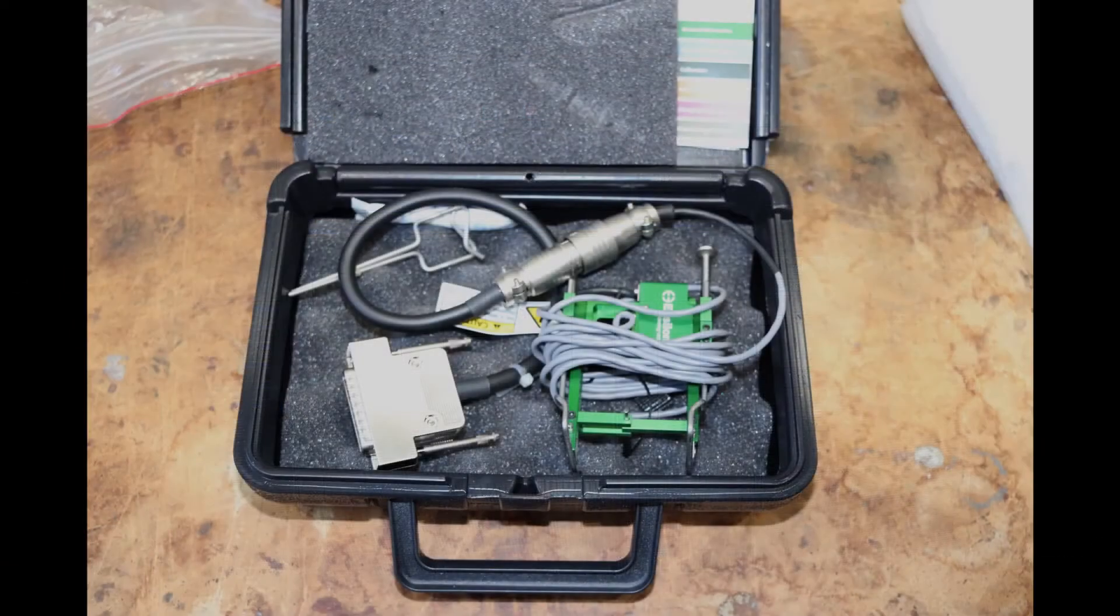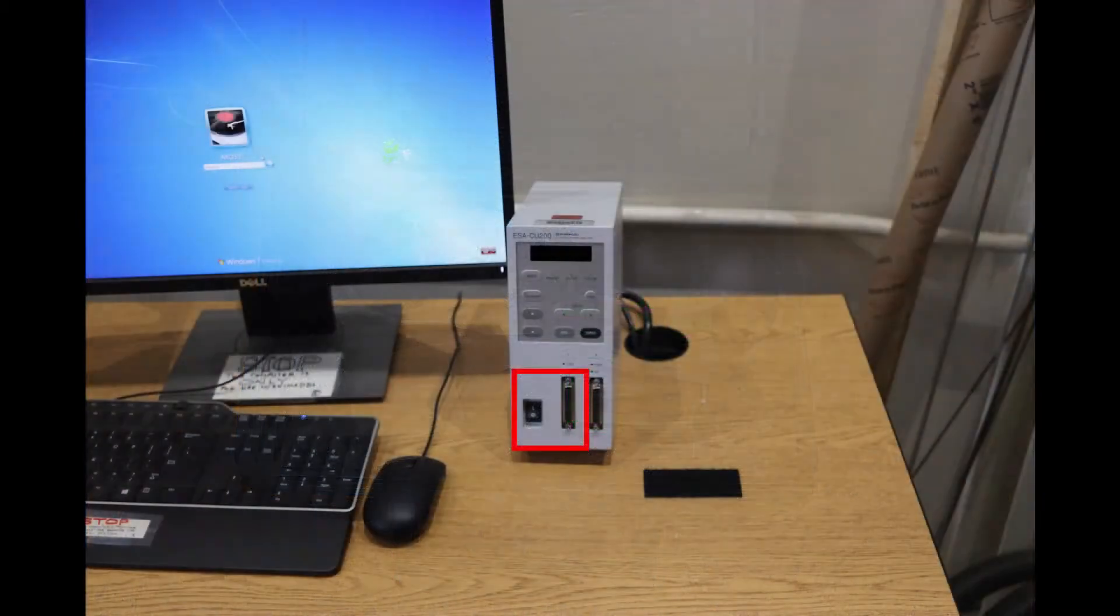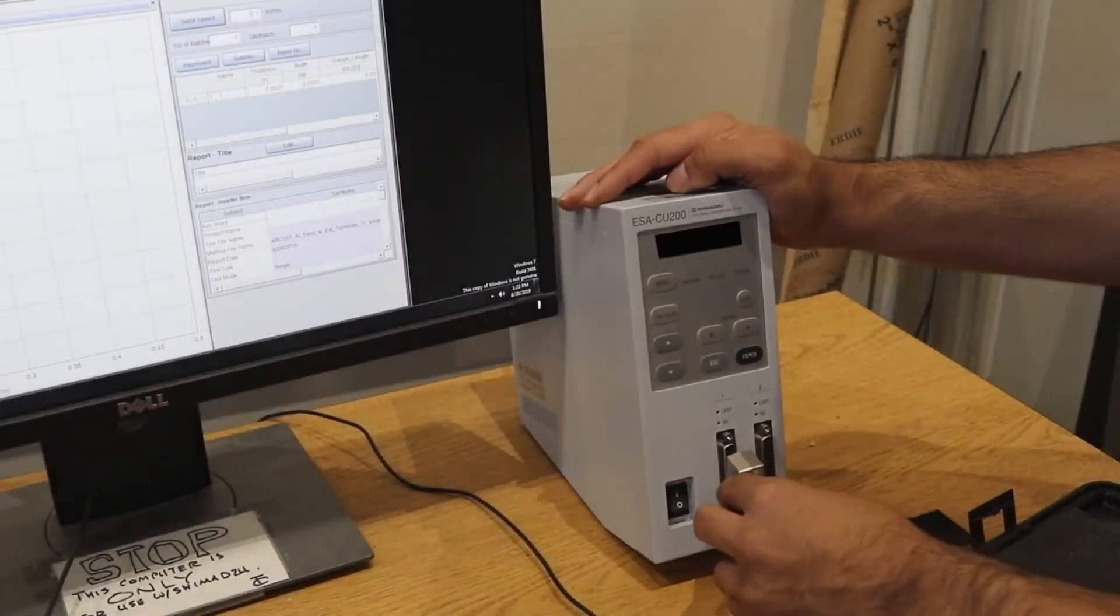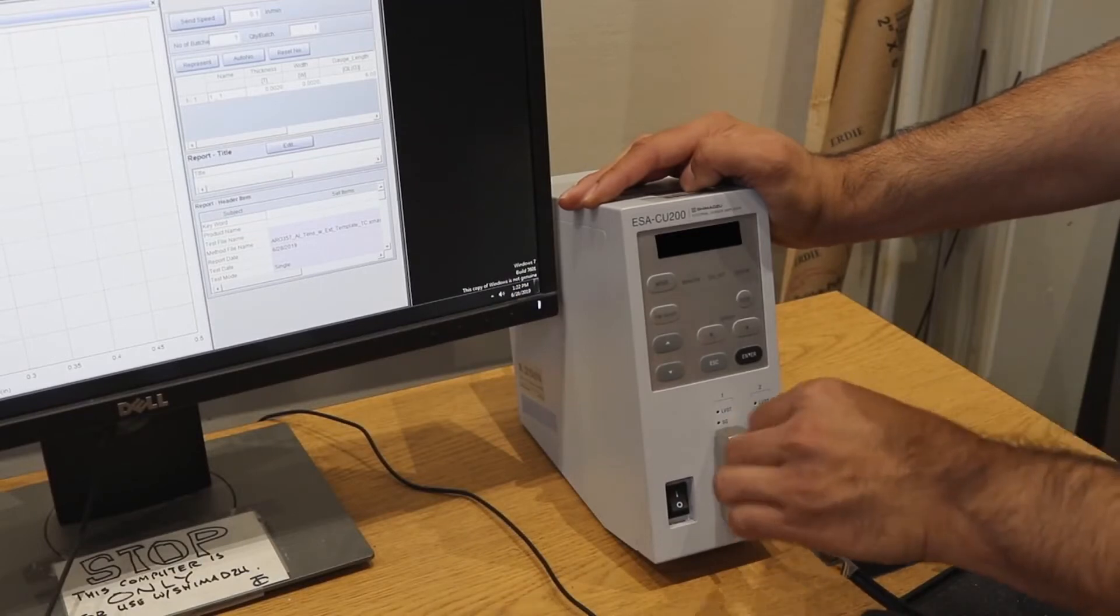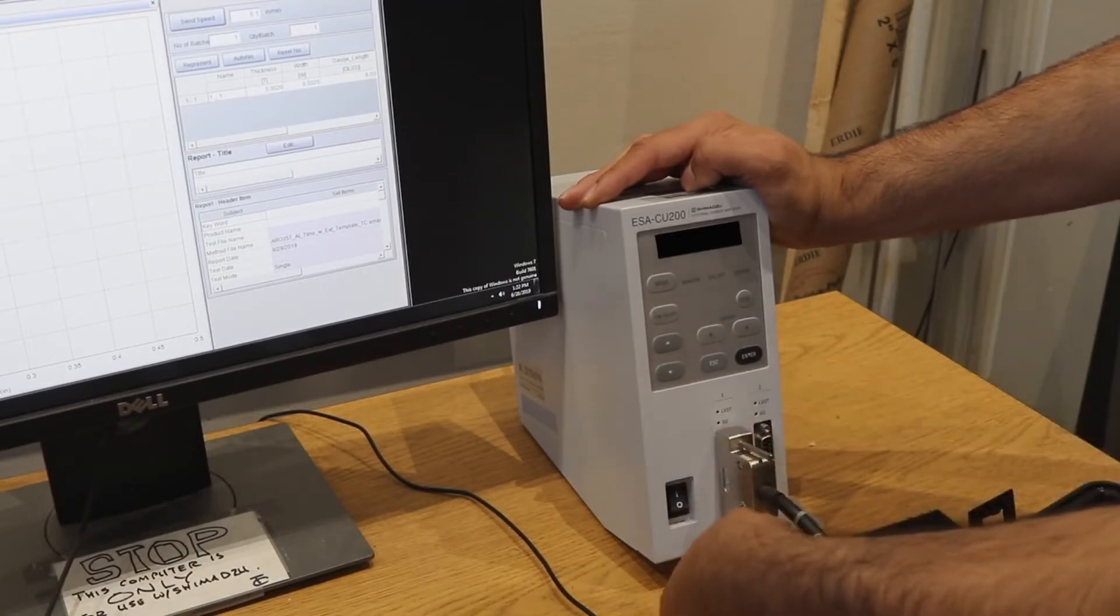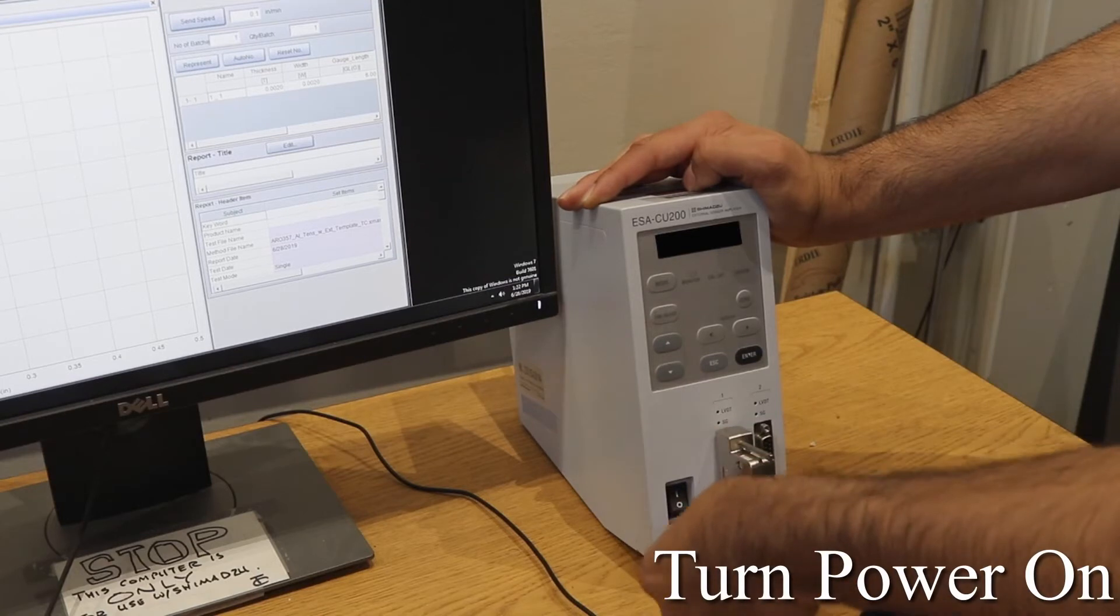Now we locate the extensometer and connect it. These are the ports we will be using on the extensometer measurement device. The pin connection only needs to be screwed lightly in place. Now we turn the power on to the extensometer.